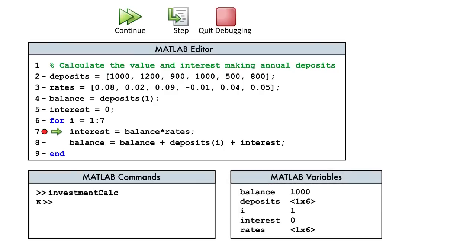We also see the current values of variables in the workspace. Notice that the loop variable is 1, and interest is 0. Thus, the code was stopped before line 7 was executed.